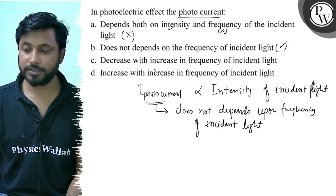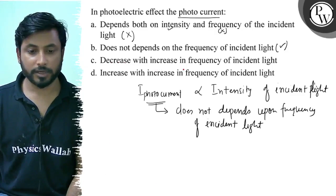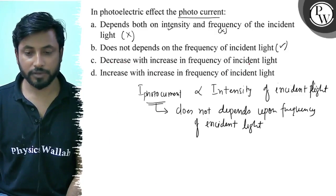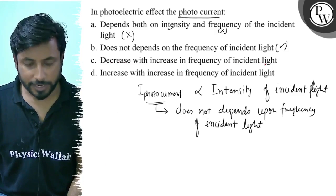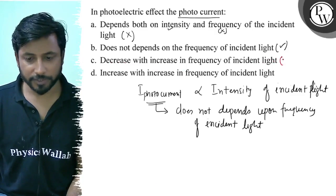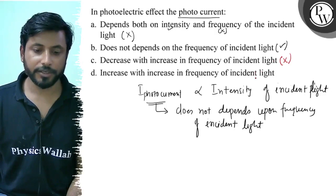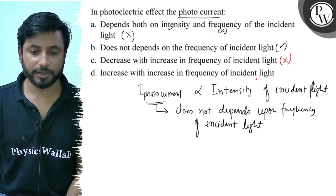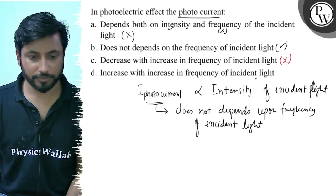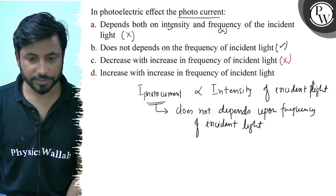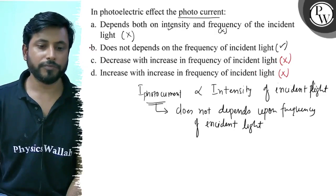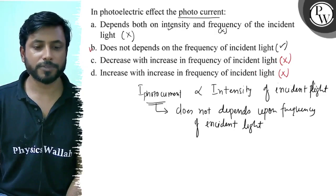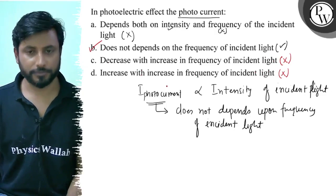This is right — decreases with increase in frequency of incident light. Increases with increase in frequency. So the final answer is option B.